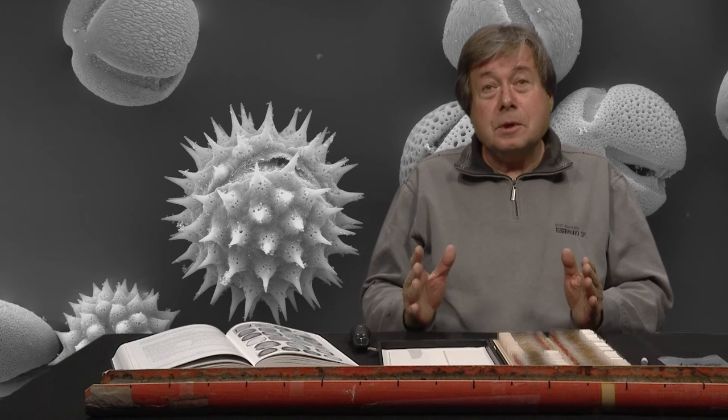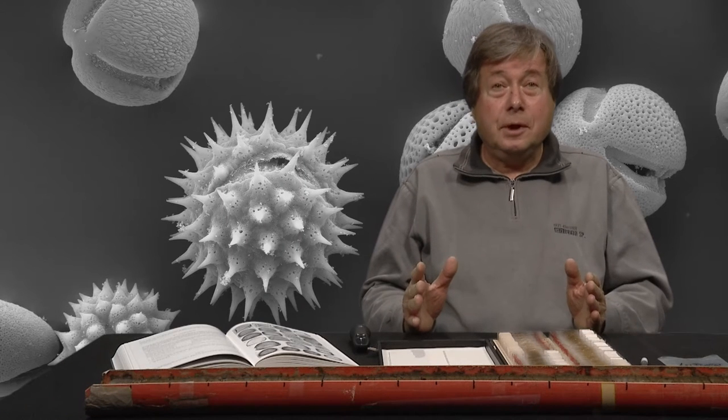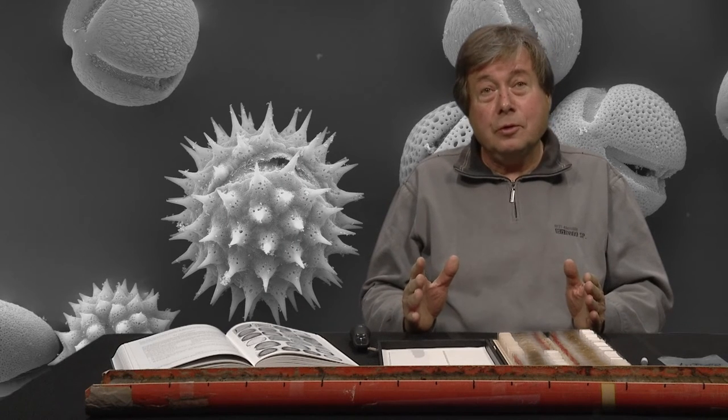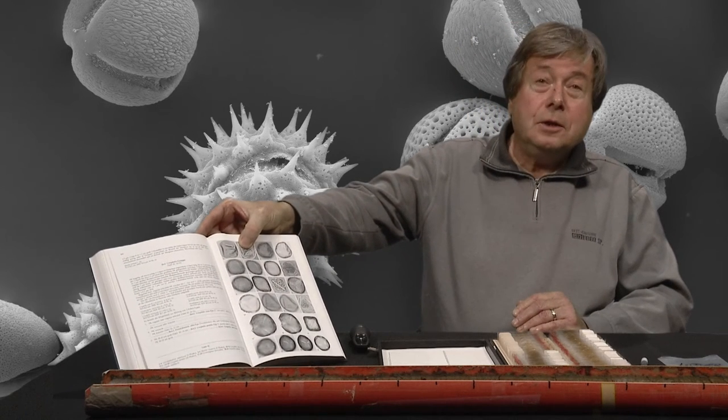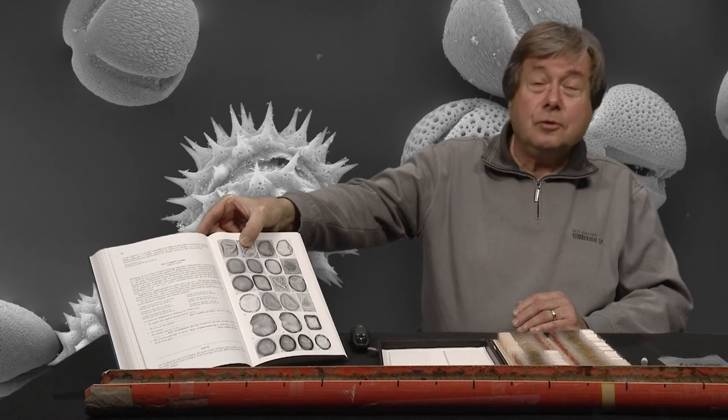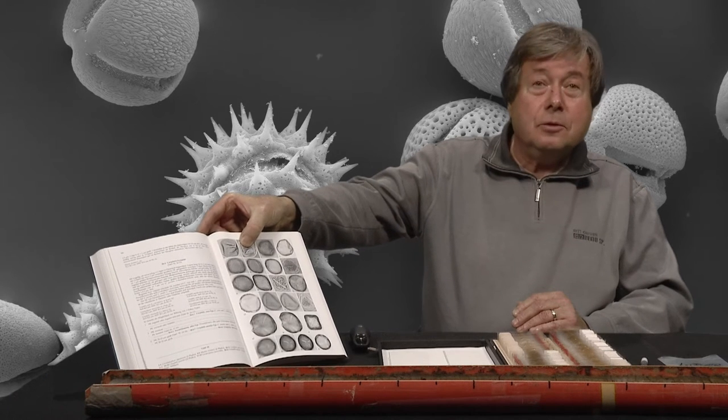Vegetation change can be monitored by pollen grains, produced by the flowers of the plants. And here in this book you see illustrations of many different pollen grains. These are photographs taken under the microscope.